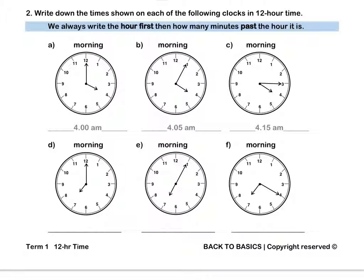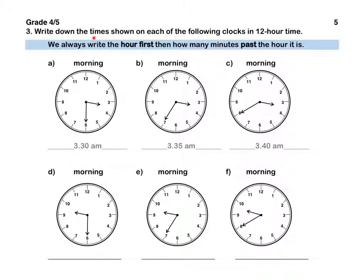For C, now it is 15 minutes past 4 so we write 4.15 AM. Pause this video to complete question 2. Question 3. Write down the time shown on each of the following clocks in 12 hour time. Remember we need to use AM for morning times. We always write the hour first and then how many minutes past the hour it is. For A, it is half past 3 in the morning so we write 3.30 AM.